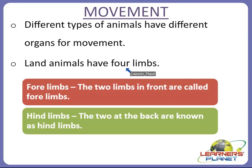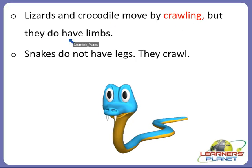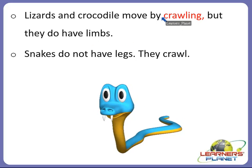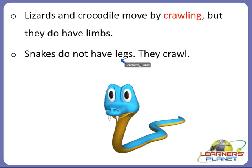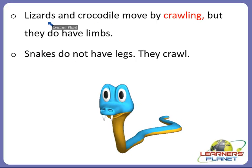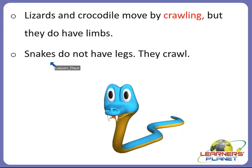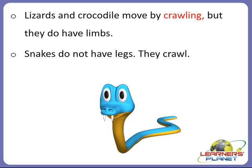Do not be mistaken between fore and four limbs. For example, lizards and crocodiles move by crawling, but they do have limbs. Snakes do not have legs, and that is why they crawl. The main difference between snakes and lizards or crocodiles is that lizards and crocodiles move by crawling even though they have limbs, but snakes crawl because they have no legs.